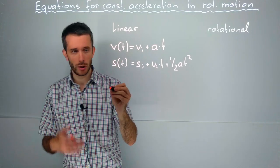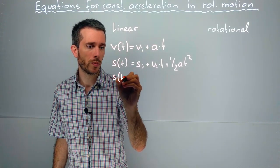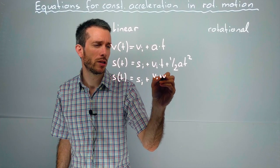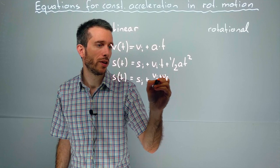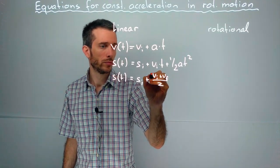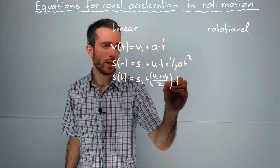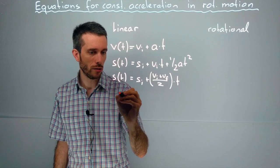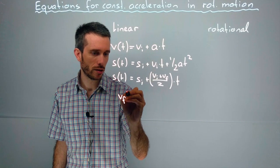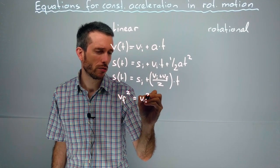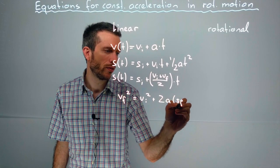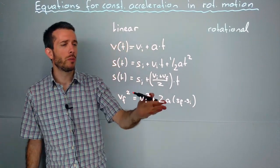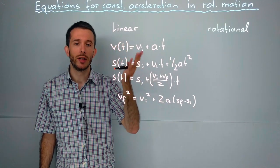I had another equation for the position as a function of time, which was it's equal to the initial position plus my average velocity, which is my v initial plus v final over 2, times the time. And then I had a combination of my first and second equation, which turned out to give us that v final squared is v initial squared plus 2a times s final minus s initial. This last equation turned out to be very useful for any problem where we're not really caring about the time.